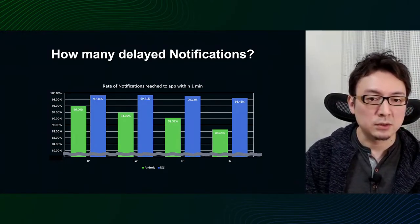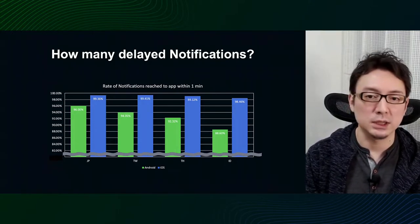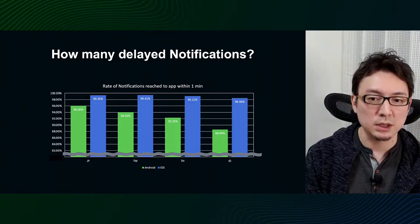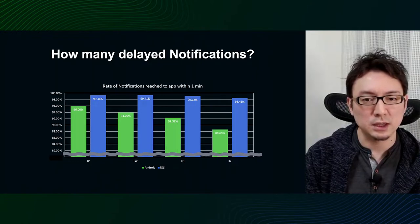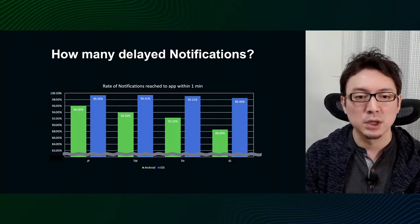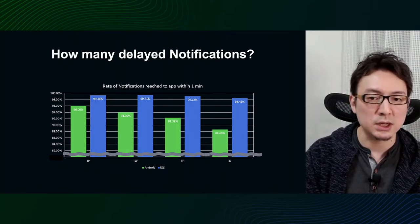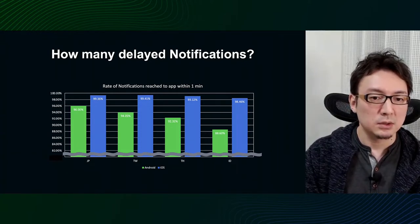Let's compare the data by region. From the left, there are Japan, Taiwan, Thailand, and Indonesia. First of all, latency in Android is much higher than in iOS, so we decided to focus on Android. As I mentioned earlier, there might be unique circumstances overseas causing delays. But the actual data shows the rate of latency is still higher in Thailand and Indonesia than in Japan and Taiwan. If you are only doing development and QA in Japan and not checking the data, you may not be aware of such problems in other markets.